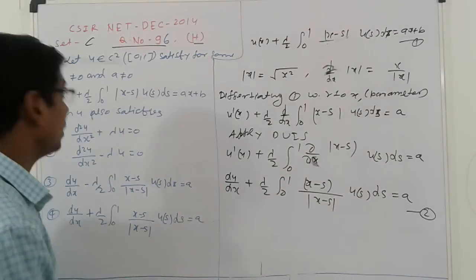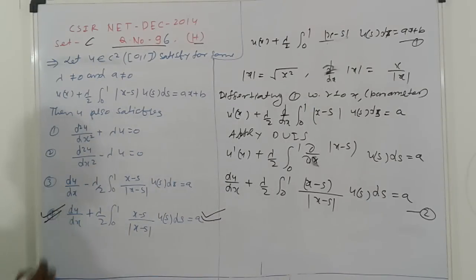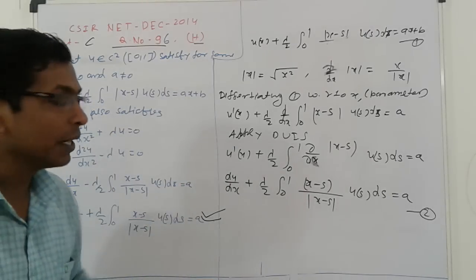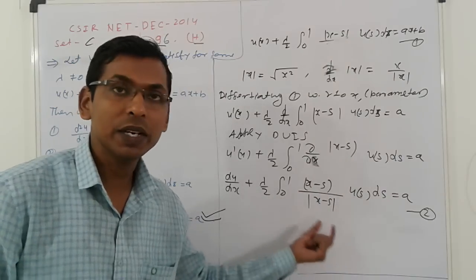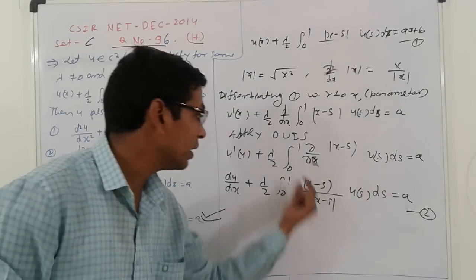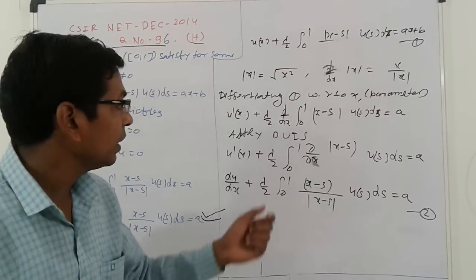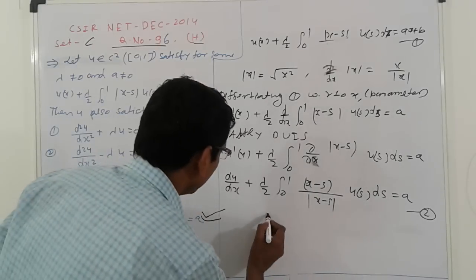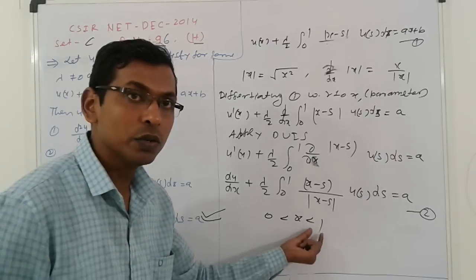Now the first and fourth options appear correct. For the remaining options, we apply the second derivative. If we directly differentiate again, we get 0 because that direct derivative is 0. So instead, we split the limit: since 0 < x < 1, we write the integral as two parts: ∫₀ˣ and ∫ₓ¹.